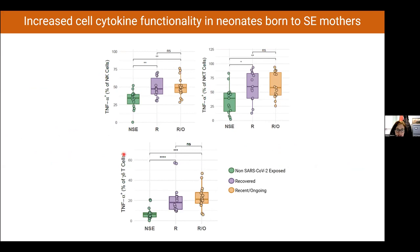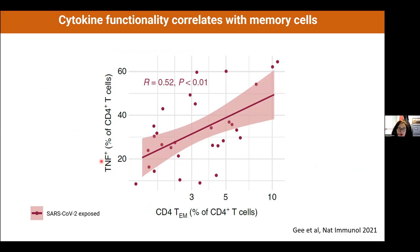This elevated cytokine production was also seen in NK cells, NKT cells, and gamma-delta T cells — generally all cytokine-producing cell types appeared elevated. The increased ability of these cells to make TNF appeared to be related to the presence of more memory cells.